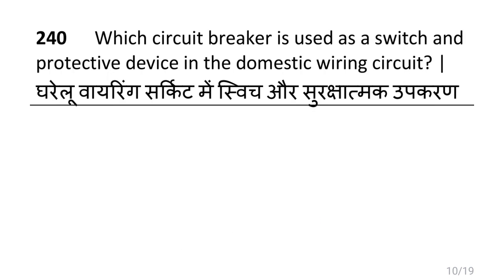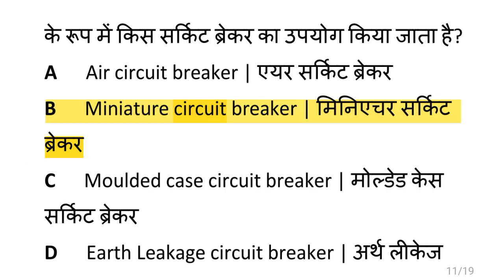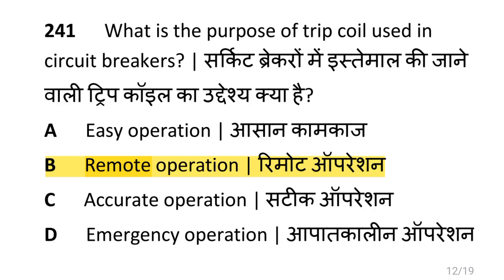Which circuit breaker is used as a switch and protective device in a domestic wiring circuit? That is a miniature circuit breaker, i.e. MCB. What is the purpose of a trip coil used in a circuit breaker? That is for remote operation.